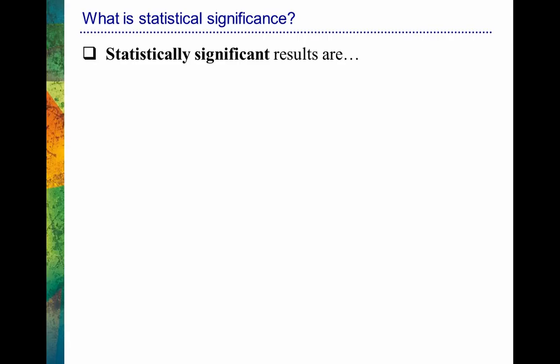Let's first talk about what it means to have statistically significant results, because that's really what we're shooting for. We want to understand how to compute if we have statistically significant results. And more importantly, we want to understand what that means. And as I've mentioned, it's based on probability. So let's talk about that a little bit.